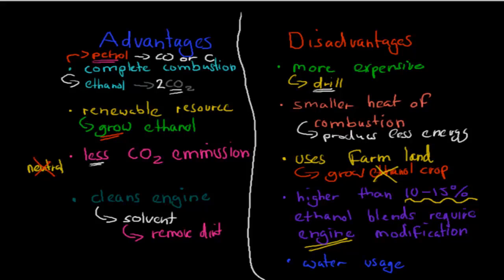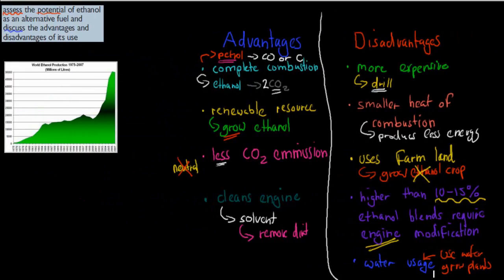Another disadvantage was water usage. Obviously if we want to grow plants, we have to use water to grow plants, and that is a bad thing in Australia. We are a dry continent, we don't have that much water, so we might not be able to afford using water to grow ethanol plants, because we have to conserve that water.